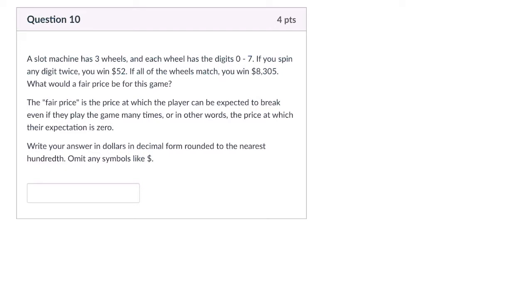So we have a slot machine, and it's got three wheels, and each wheel has the digits 0 through 7. So I'm going to write this down. That means there are eight digits in total, right? It includes 0. So 0 through 7, that's eight different digits. If you spin any twice, you win $52.